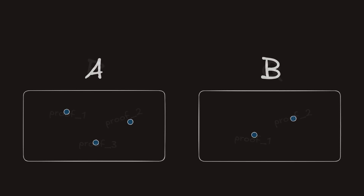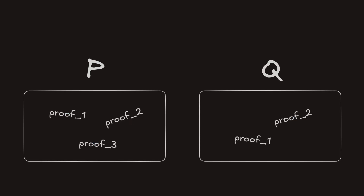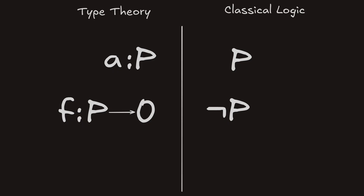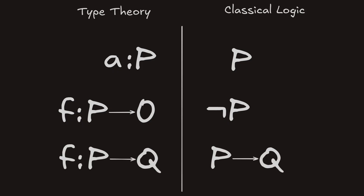In the previous video we learned what happens when we treat types as propositions. We also learned how to construct proofs, negations, and implications in type theory. In particular, we learned that an implication is simply a function from one proposition to another.